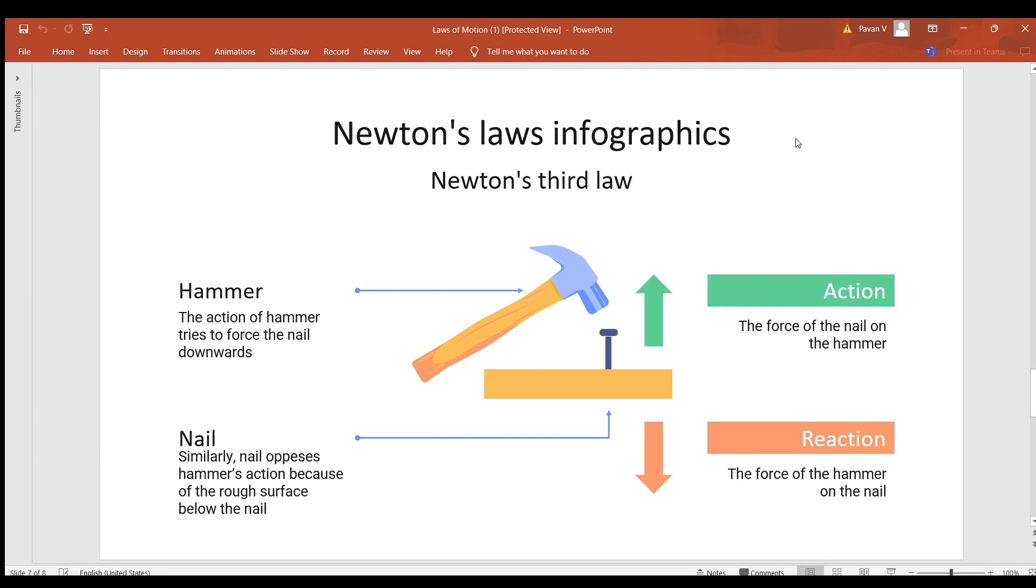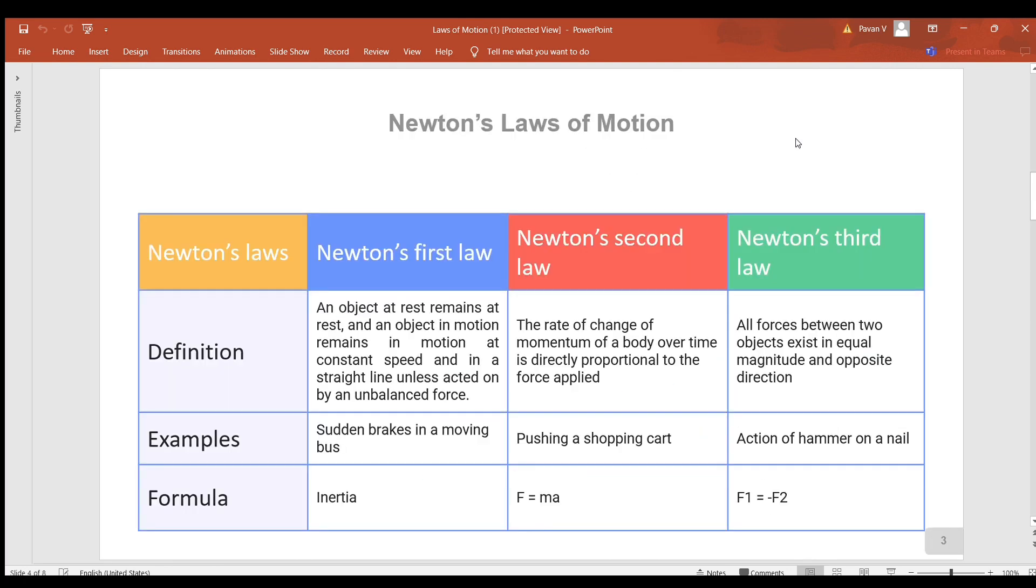Every action has an equal and opposite reaction. The hammer tries to hit the nail downwards; similarly, the nail opposes the hammer's action. The formula is: F1 = -F2, or force applied by object one equals negative force applied by object two.